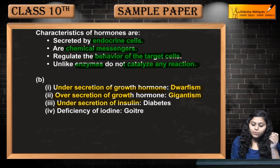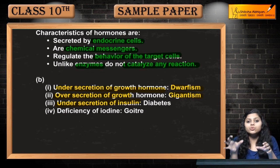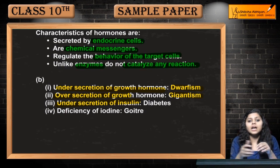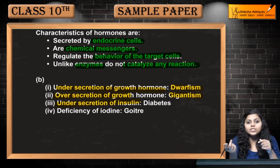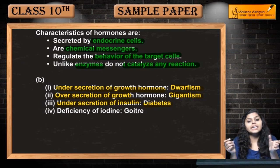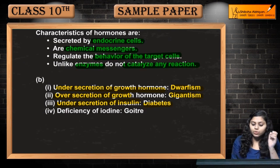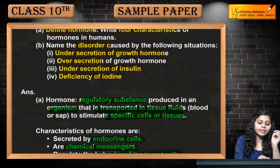Under-secretion of insulin controls sugar levels. If there is under-secretion of insulin, the sugar levels will increase, and diabetes is caused. If iodine deficiency occurs, it leads to a thyroid-related disorder. This concludes question number 18.